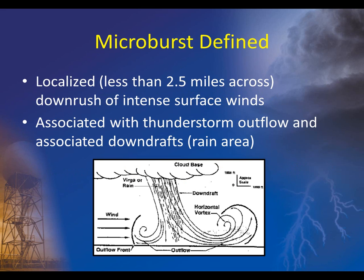Microbursts are associated with the downdraft portion of a thunderstorm, or what we call thunderstorm outflow. This can be accompanied by rain, but it doesn't necessarily need to be.